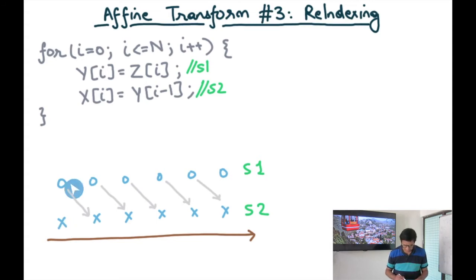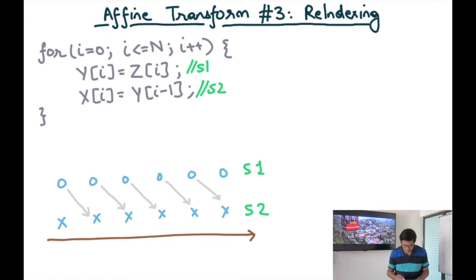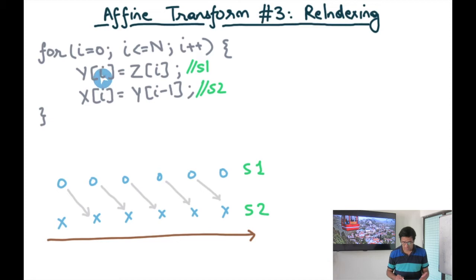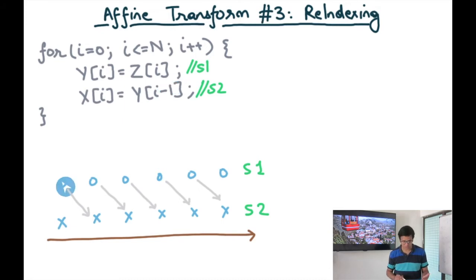I have multiple instances of S1 and multiple instances of S2. In this case there is a dependency from y0 to y0. In other words, the 0th iteration of S1 has a dependency on the first iteration of S2 because that's when both of them access y0. So I draw an edge from the 0th iteration of S1 to the first iteration of S2.